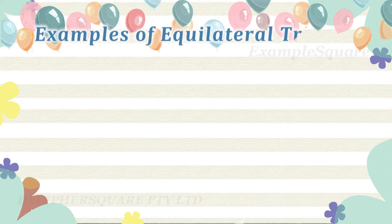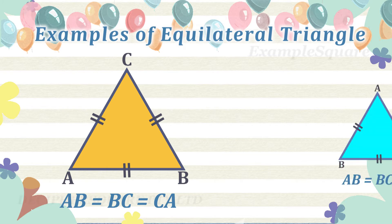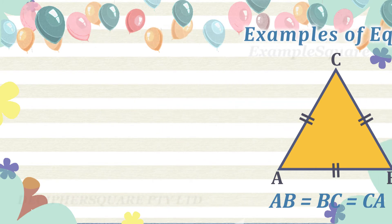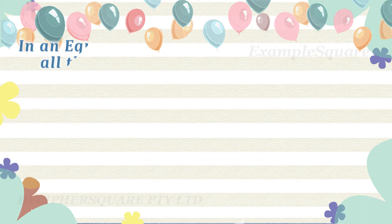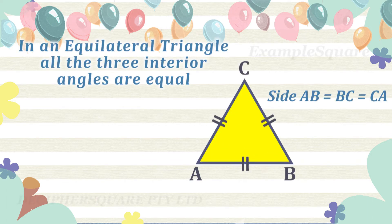These are some examples of equilateral triangles. In an equilateral triangle, all three interior angles are also equal.